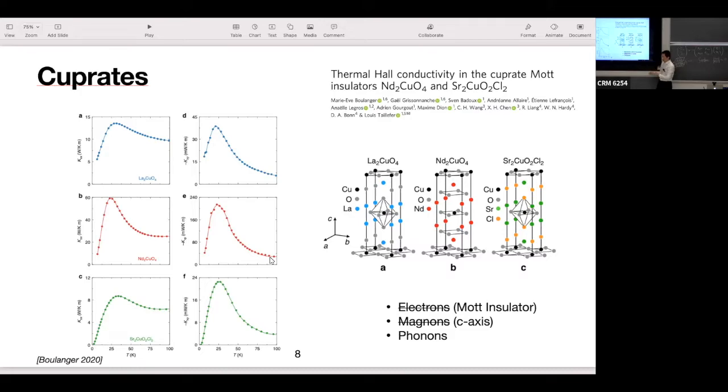They also thought maybe there's magnons, spin waves that carry heat coupled to the magnetic field. But they also did some experiments where you send heat perpendicular to the cuprate planes. Before we were sending it in plane in the x direction and measure it in the y direction. Now they send heat in the z direction. And they measured similarly, like a similar curve, as in the in-plane one.